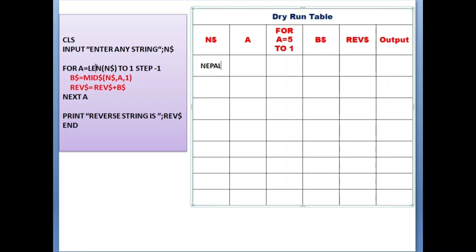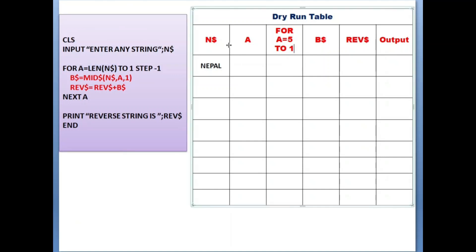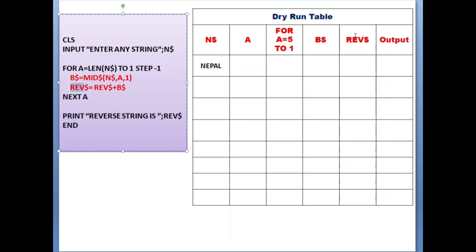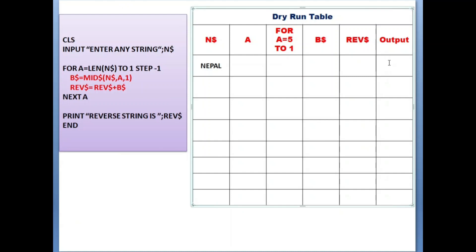Sometimes we need to write the loop condition. The loop is starting from 5 to 1. Why 5 to 1? Because for this trace process I am storing 'Nepal' - I will be explaining with this string. So for the trace you need to keep some values. In N$ we have 'Nepal' and how many characters do we have? That is 5. So the length of N$ will be 5, so the loop starts from 5 and goes up to 1, because it is written step minus 1 - descending order 5 to 1.